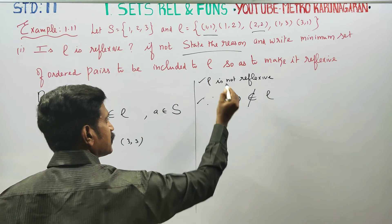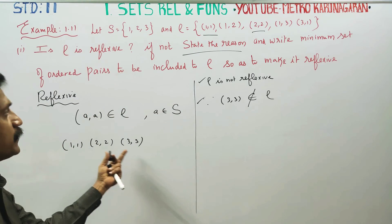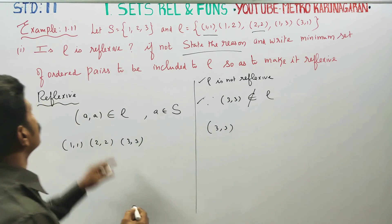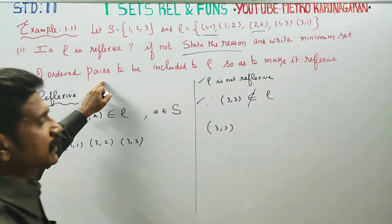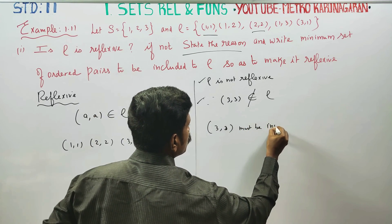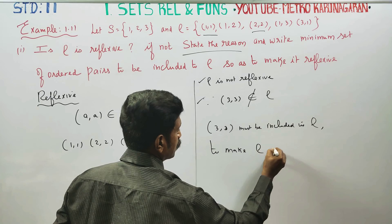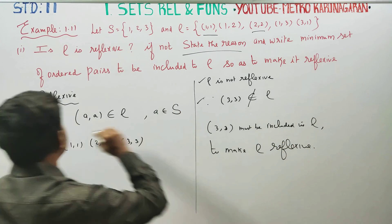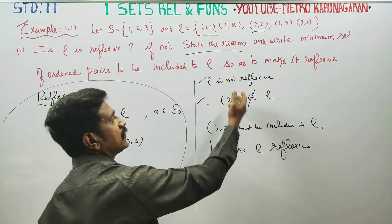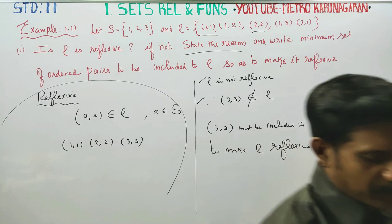First answer given, second part: write the minimum set of ordered pairs to be included. To make Rho reflexive, include (3,3). Write the minimum set: {(3,3)}. To make Rho reflexive, (3,3) must be included. Thank you.